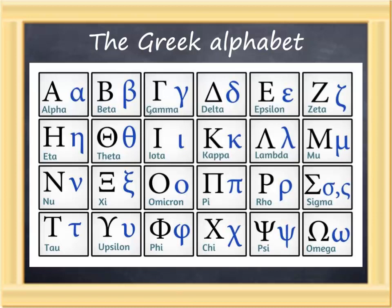Upsilon is the U sound, but it's best pronounced as the German umlauted U — Ü. Phi carries the sound of two English letters, P and H, as in phone. Chi is the hard CH sound, as in lock. Psi again conveys the sound of two English letters, P and S — it's like lips. And omega is the long O sound, as in tone.